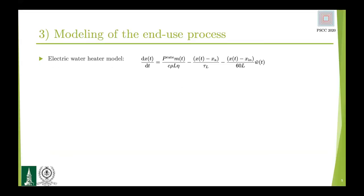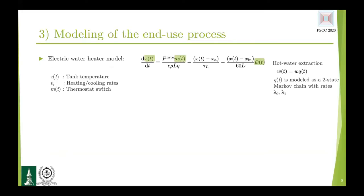The modeling process starts with the model of an individual electric water heater, which is a first-order differential equation. Here X represents the average temperature inside the tank. M is the state of the thermostatic switch, and the water extraction process is modeled as a two-state Markov chain with rates lambda zero and lambda one. These rates lambda zero and lambda one are the parameters that we want to identify from the AMI data, and the AMI data is some form of measurements obtained for the variable M, which is the state of the thermostatic switch.